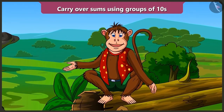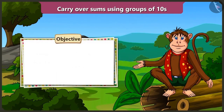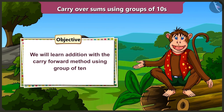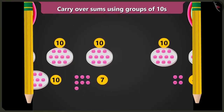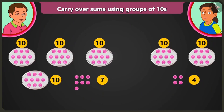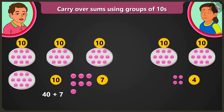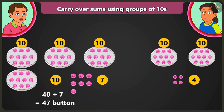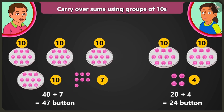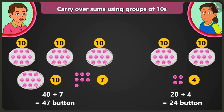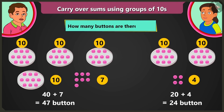Hello friends! Today in this video, with the help of some examples, we will learn addition with the carry over method using groups of tens. Look, Bubbly! There are 47 pink buttons and 24 red buttons. So tell me, how many buttons are there in total?